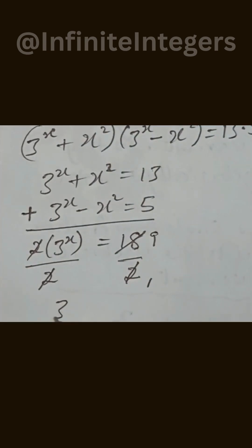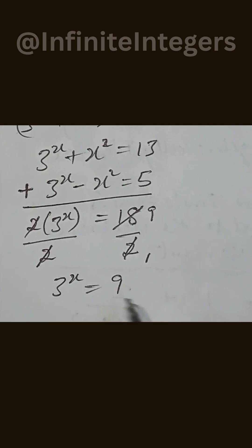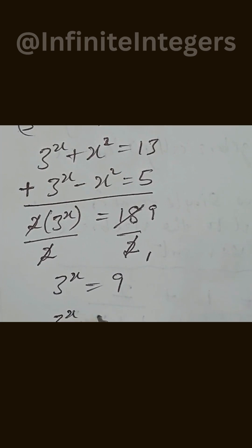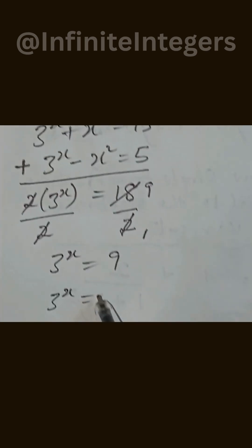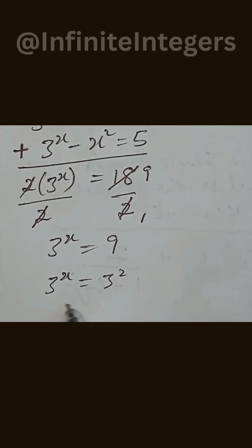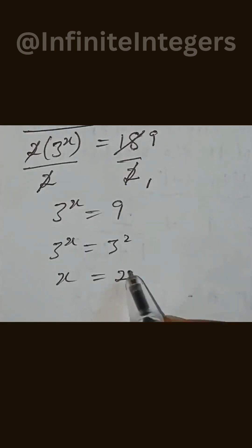Simplifying 9 as 3 squared, we have 3 to the power of x equal to 3 to the power of 2. Therefore x equals 2.